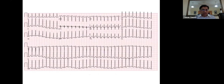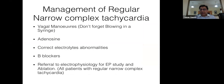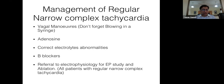This next ECG shows a regular narrow complex tachycardia — this is AVNRT. For managing regular narrow complex tachycardia in an inpatient setting, vagal maneuvers are the first step. An often-forgotten maneuver is having the patient blow forcefully into a closed syringe. In acute situations, adenosine can be used. Correct electrolyte abnormalities and use beta blockers. All patients with narrow complex tachycardia should be referred for EP study and ablation.